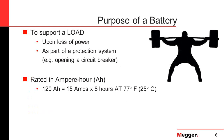The purpose of a battery is obviously to support a load based on a loss of power or as part of a protection system such as opening a circuit breaker. When we look at a battery, we're always provided what kind of load it would support based on a rating of ampere hours. Batteries are rated at a certain amount of current for a specified amount of time. For example, a 120 amp hour battery could be 15 amps by eight hours, and that is at 77 degrees Fahrenheit or 25 degrees Celsius.